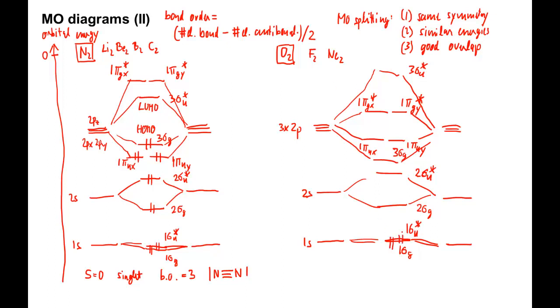The electrons fill the MOs up to 14, then the last two electrons go into the two degenerate antibonding pi orbitals, one in each, 15 and 16.